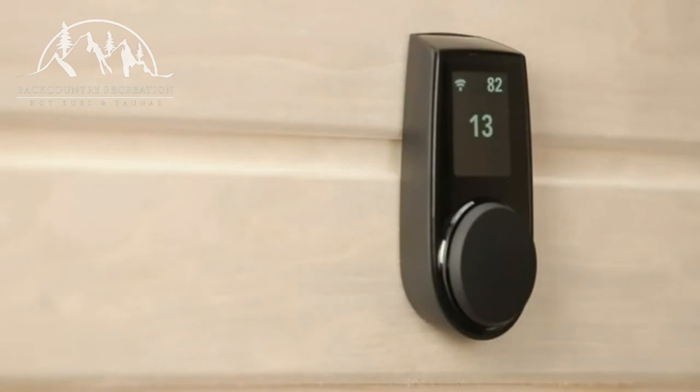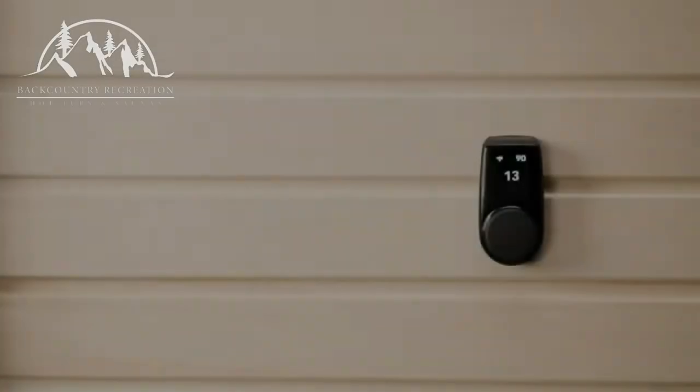To turn on the control panel, simply press the dial. When you press it again, it will start heating, which is indicated by these wavy heat lines. Press it one more time and it will stop heating. The screen goes off automatically when the Sauna isn't heating and the panel isn't being used.